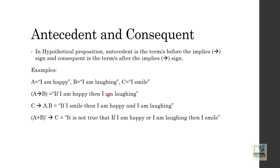The implies sign converts to 'if...then' — before the first proposition we put 'if', and in between the first and the second proposition we put 'then'. So in this example, A is the antecedent and B is the consequent. That means in the sentence, 'I am happy' is the antecedent and 'I am laughing' is the consequent.